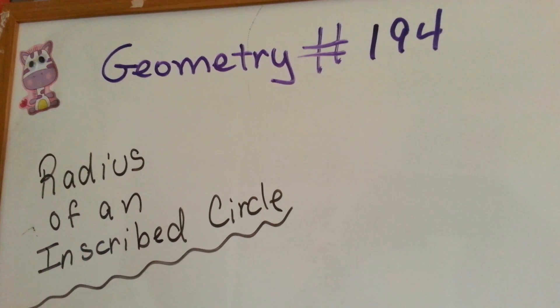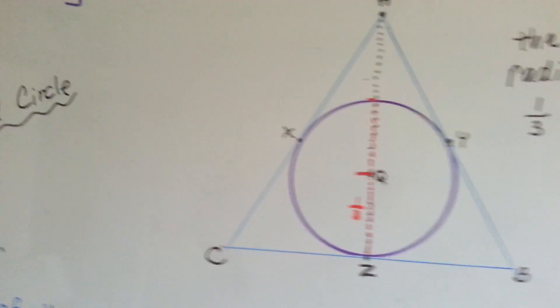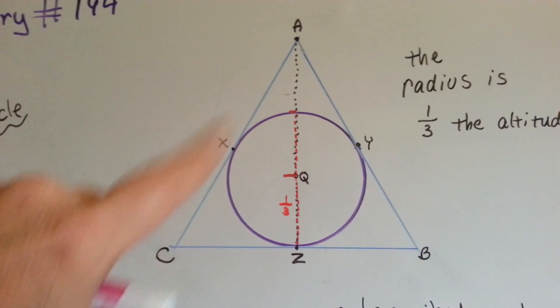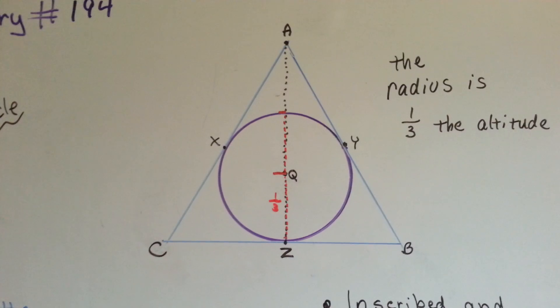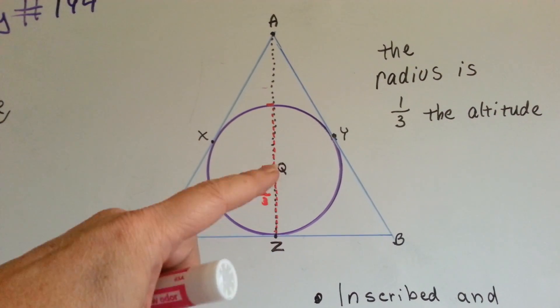Geometry number 194, Radius of an Inscribed Circle. Let's take a look at this picture. We have an equilateral triangle with an inscribed circle, and you can see q is the center point and qz is the radius.